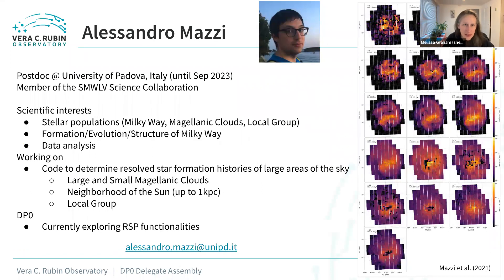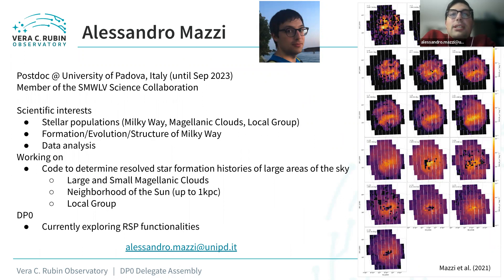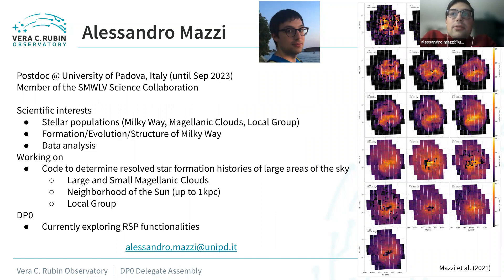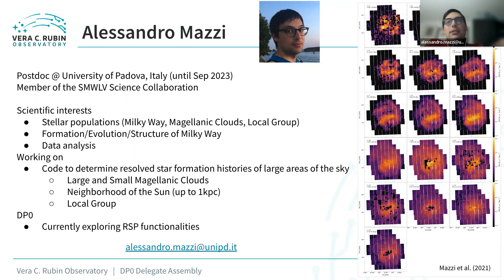Alessandro Maxi here — I'm a postdoc from the University of Padova in Italy and a member of the Southern Milky Way Local Volume Science Collaboration. My main scientific interests are stellar populations of the Milky Way, Magellanic Clouds, and local group — the formation, evolution, and structure of the Milky Way. I'm working on a code to derive star formation histories of large areas of the sky, already applied to the Large Magellanic Cloud, and planning to apply it to the Small Magellanic Cloud, the solar neighborhood, and more broadly to the local group. I'm new to DP0 and still learning how to use the RSP.